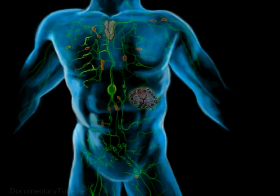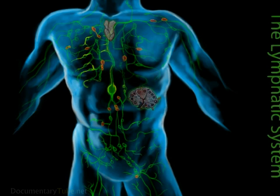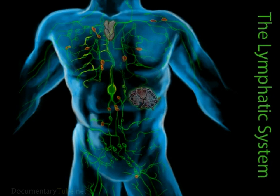The Lymphatic System. Lymph vessels are found in all tissues except the central nervous system, the bone marrow, and tissues without blood vessels, such as cartilage. The lymph system vessels are as extensive as the vessels of the circulatory system.